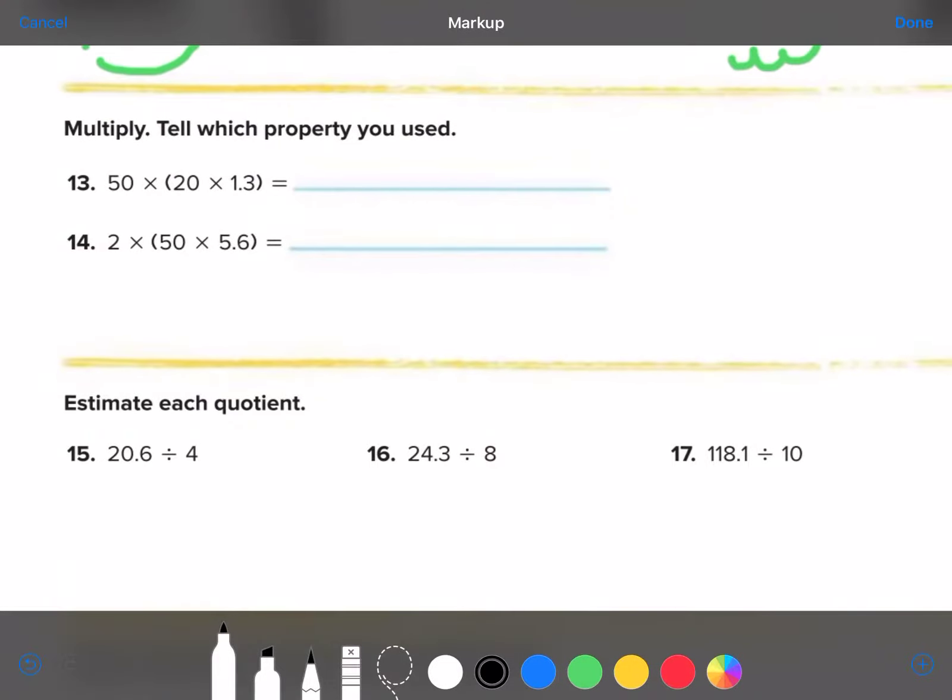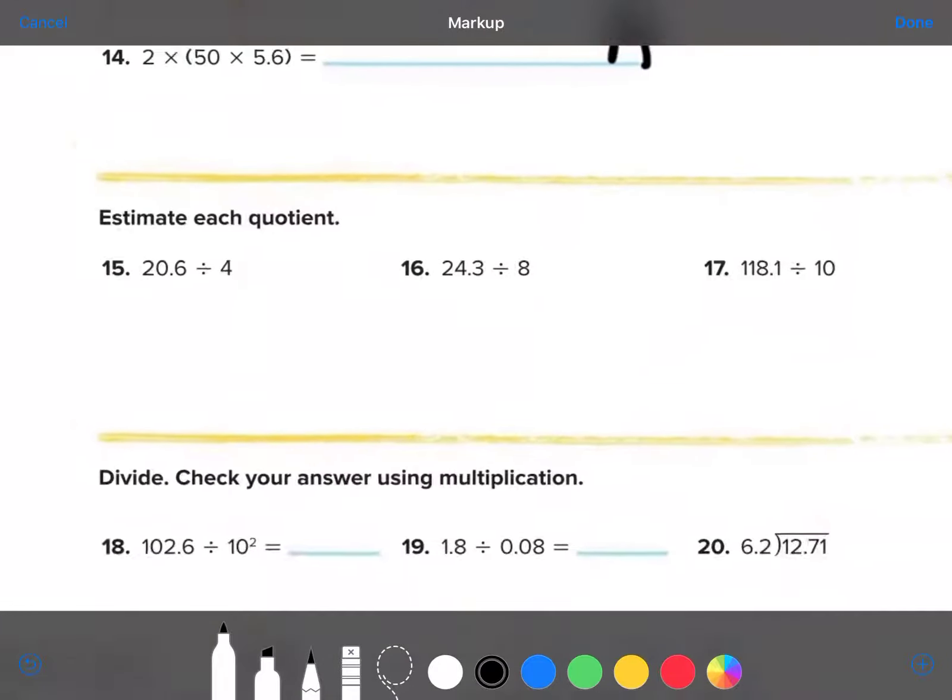Multiply. Tell which property you use. Okay. So, you always do what's in the parentheses first. Okay. You might need some graph paper for this. And, it looks like they are associating certain properties. So, you're going to write associative and associative. But, don't forget to tell me the answer. And, you're going to have to figure it out.